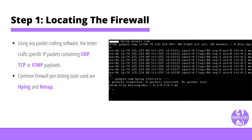Step one: locating the firewall. Every firewall penetration test will begin with locating the firewall. Using any packet crafting software, the tester crafts specific IP packets containing UDP, TCP, or ICMP payloads. Common tools used are HPing and Nmap. HPing can scan one IP address at a time compared to Nmap, which can scan a range of IP addresses. For less aggressive scans to avoid detection, HPing is a better choice. By repeating the scanning process, one can map the list of allowed services on the firewall.